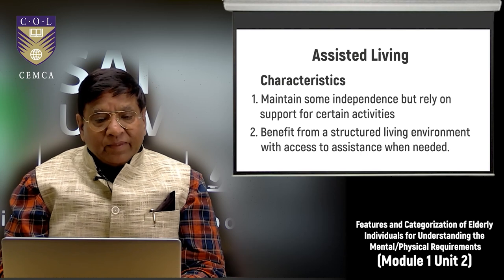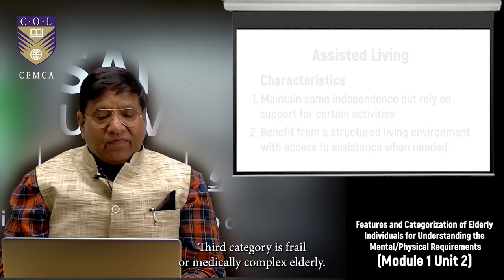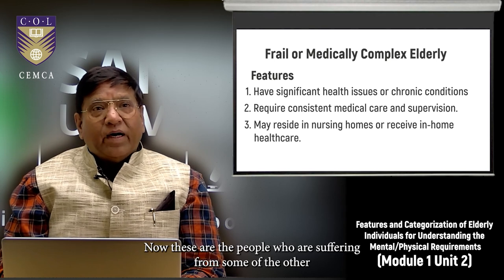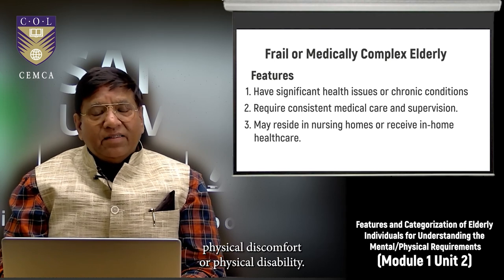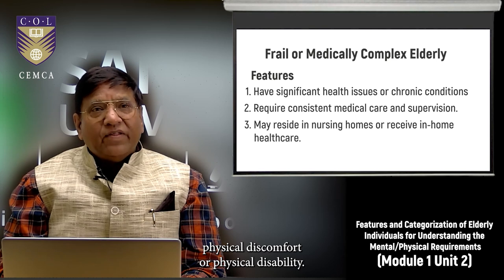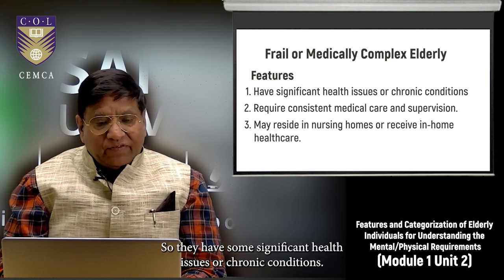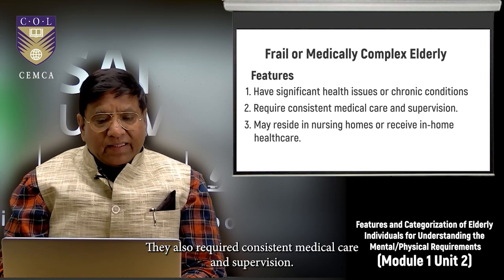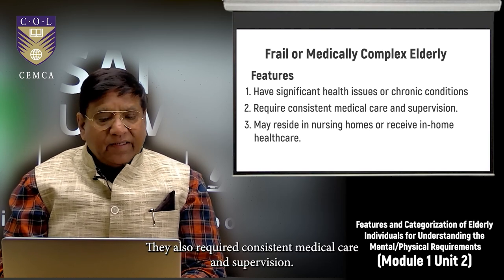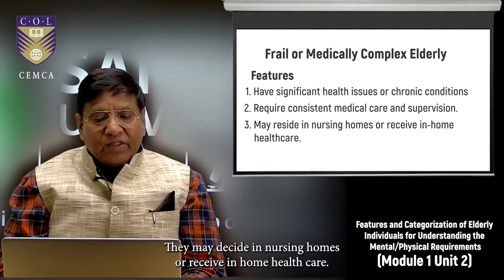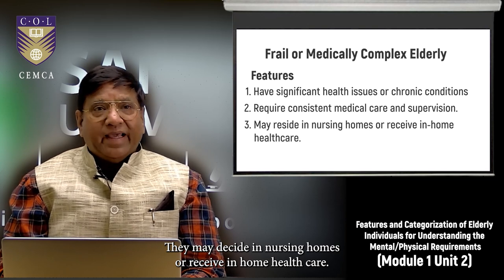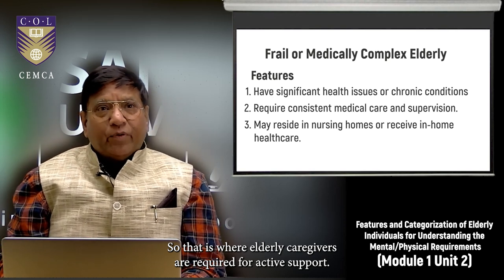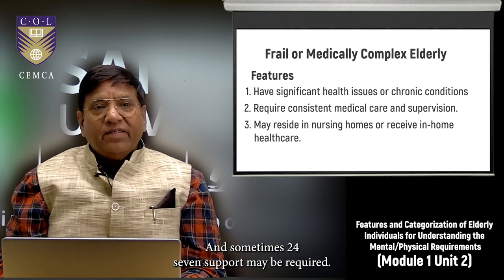The third category is frail or medically complex elderly. These individuals have significant health issues or chronic conditions, require consistent medical care and supervision, and may reside in nursing homes or receive in-home healthcare. This is where elderly caregivers are required for active — and sometimes 24/7 — support.